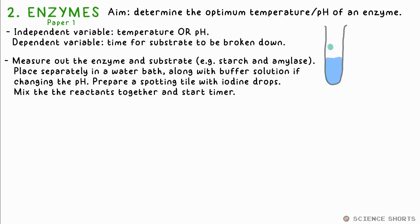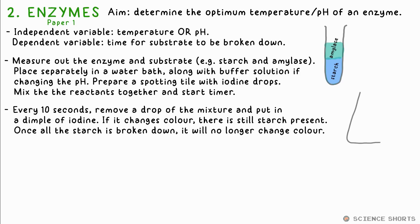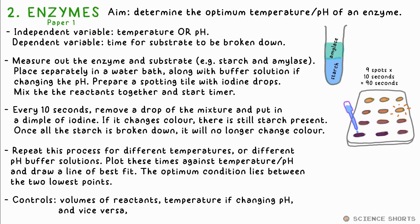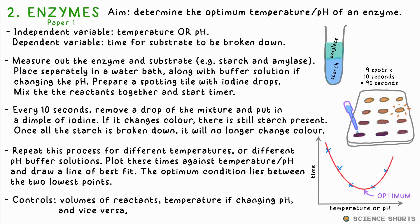Measure out a set volume of the amylase and starch solutions using a syringe or measuring cylinder, then mix together and start your timer. Every 10 seconds, remove a bit of the mixture and put a drop in the spotting tile dimple that has iodine in it. It will turn black initially, showing there's still starch present — it hasn't been completely broken down yet. Repeat this every 10 seconds until there is no colour change at all — that's the end point. Record this time. Repeat these steps using different temperatures thanks to the water bath, measuring the temperature with a thermometer in the test tube itself, or change to a different pH buffer solution. Plot the time for each against temperature or pH and draw a line of best fit, which will be a curve. We say the optimum temperature or pH is between the two lowest points.